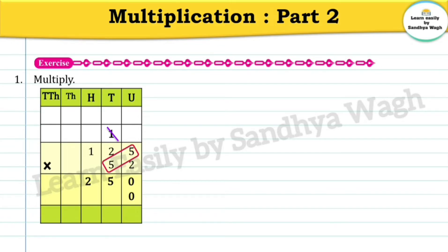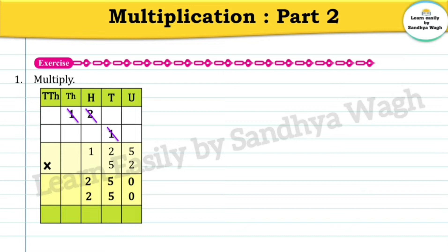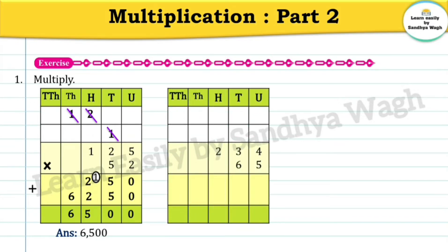Now five fives are 25, so we will write 5 in the tens place and 2 will go in the hundreds place. Five twos are 10, ten plus this two is twelve; one will go as a carry over in the thousands place. Five ones are five, plus this one is six. Now let's add these numbers: zero plus zero is zero; five plus five is ten, so we write zero and carry one; two plus two is four, plus one is five; and six. Our final answer is 6500.